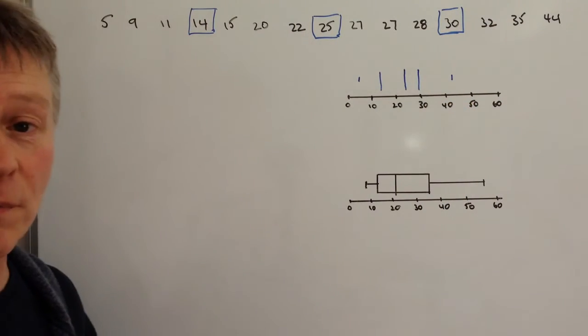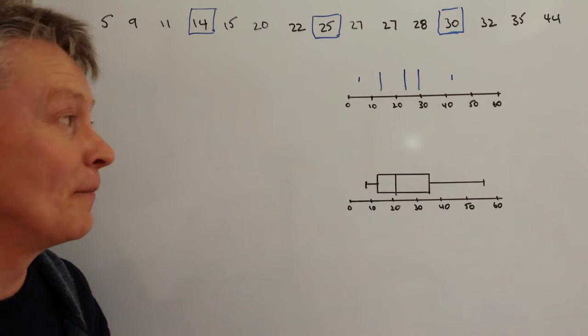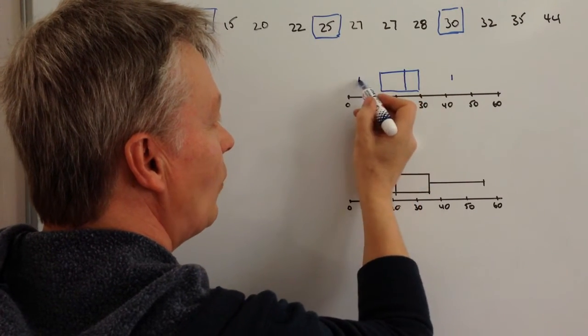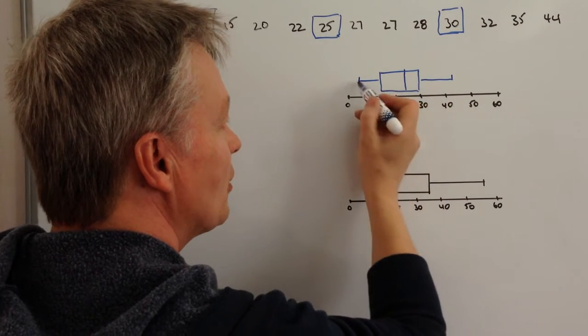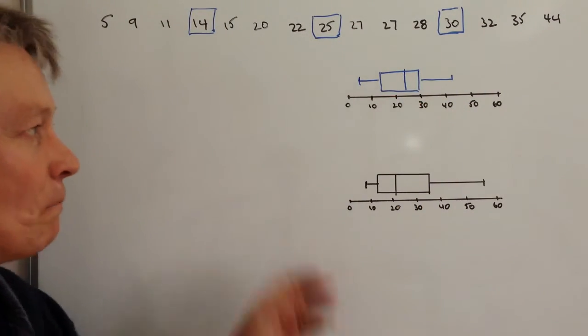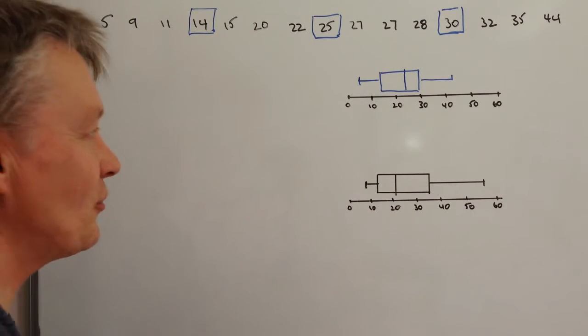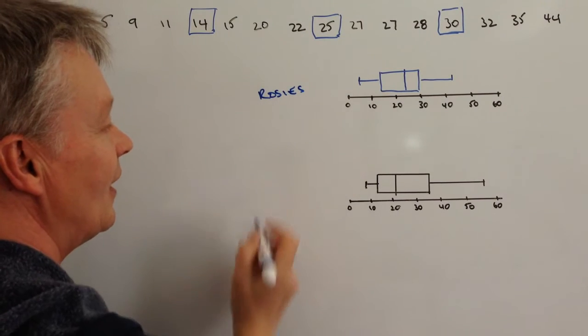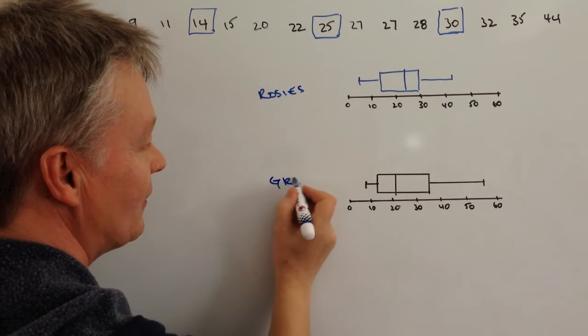OK, so that gives us our box plot. We're just going to join it all together, make it look a little bit more presentable. And what we get is this box plot looking like that. I think this particular centre is called Rose's garden centre. And this is Green's garden centre.